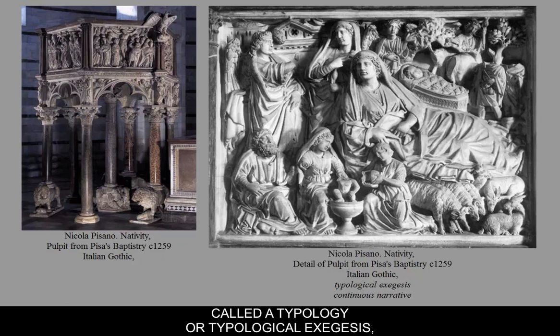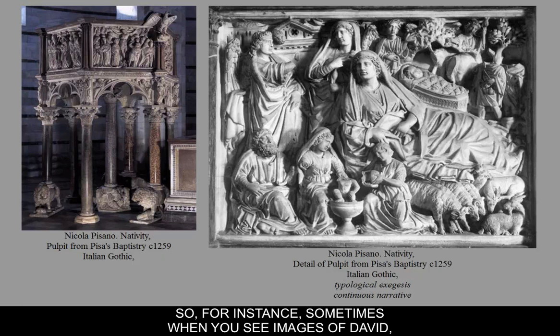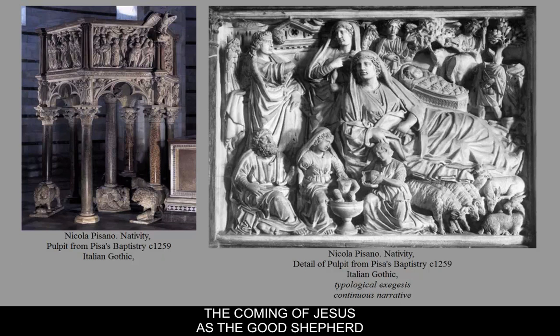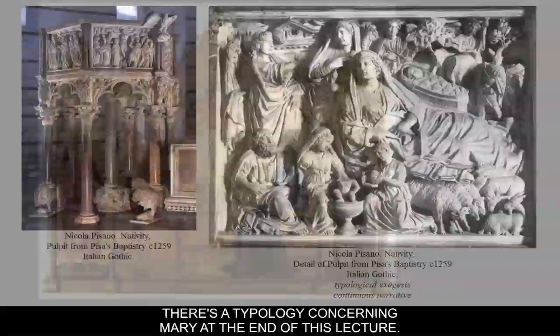Another term that's going to come up later is typology or typological exegesis, which means you have an event, usually in the Old Testament, that prefigures Jesus' role. For instance, images of David are considered a typology because it prefigures the coming of Jesus as the good shepherd, like King David was. We're going to see a typology concerning Mary at the end of this lecture.